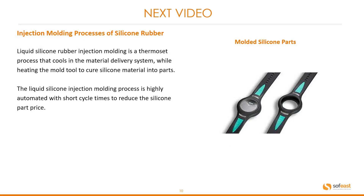In the next video we're going to be looking at the injection molding process of silicone rubber. Liquid silicone rubber injection molding is a thermoset process that cools the material in the delivery system while heating the mold tool to cure silicone materials into parts. The process is highly automated with short cycle times to reduce the silicone part price.